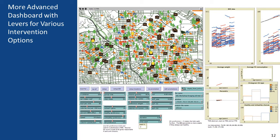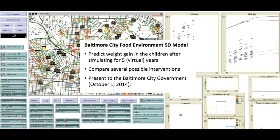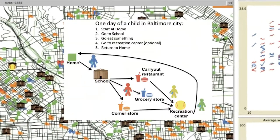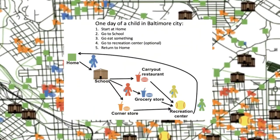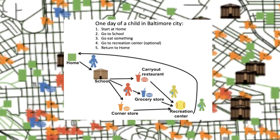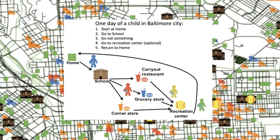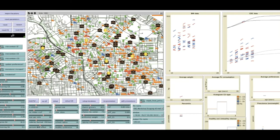Next I'm going to show a video of this dashboard in motion. Here again is the purpose of the model — we zoom into the neighborhood and see the various steps of the model, then watch the animation on the map of Baltimore.